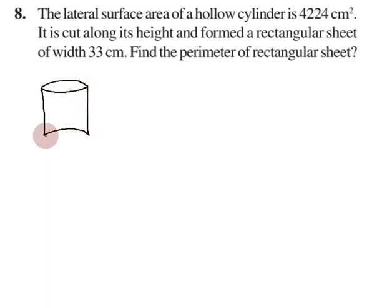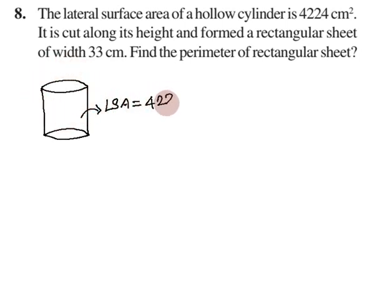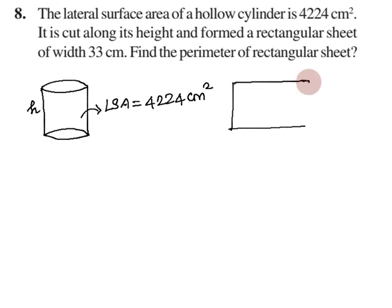The hollow cylinder is hollow on top and bottom, so this is the lateral surface area. The lateral surface area is 4224 cm². This is cut along its height to form a rectangular sheet of width 33 cm. We need to find the perimeter of the rectangular sheet.